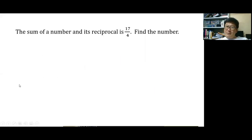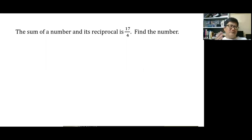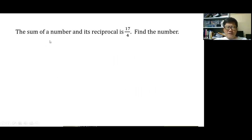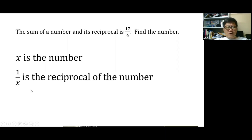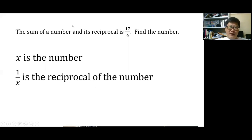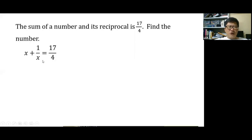Seventh word problem: the sum of a number and its reciprocal is 17 over 4. Let x be the number and 1 over x be its reciprocal. The equation is x plus 1 over x equals 17 over 4. Think of the 1 over x as a piece of chicken stuck between your teeth — you need to get rid of it by multiplying throughout by x, giving x squared plus 1 equals 17x over 4.